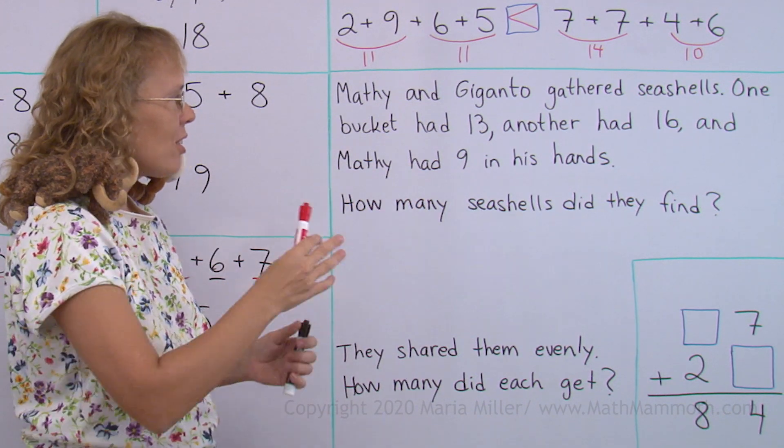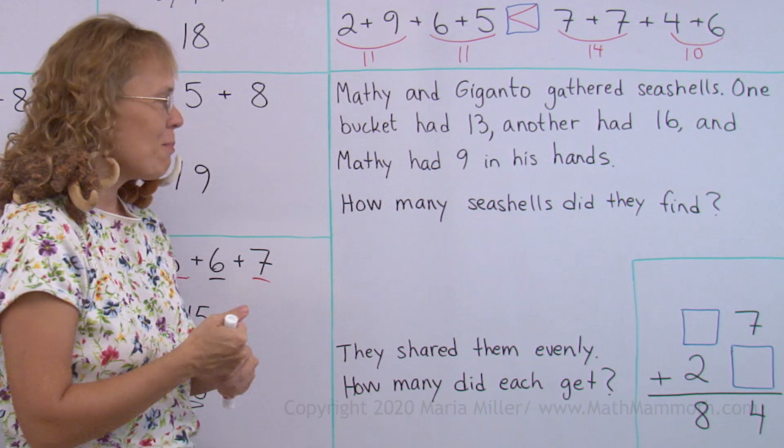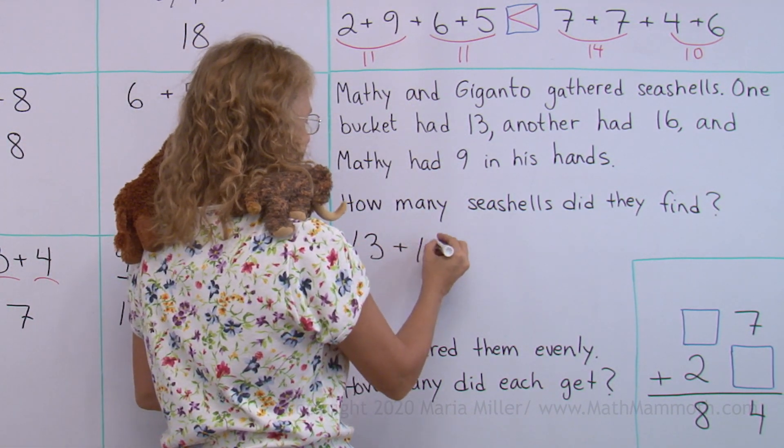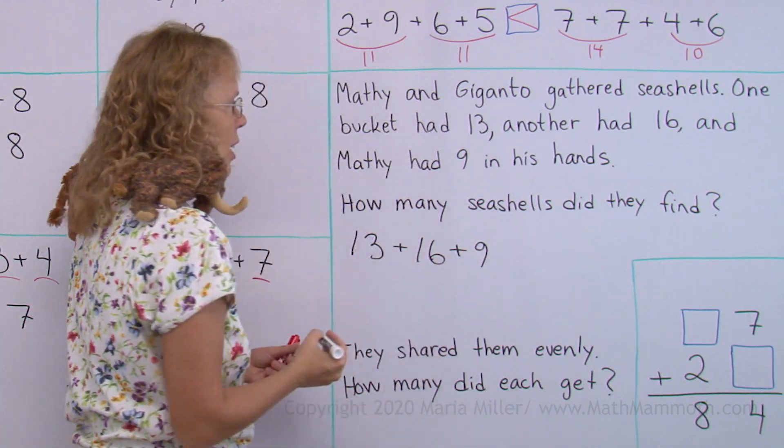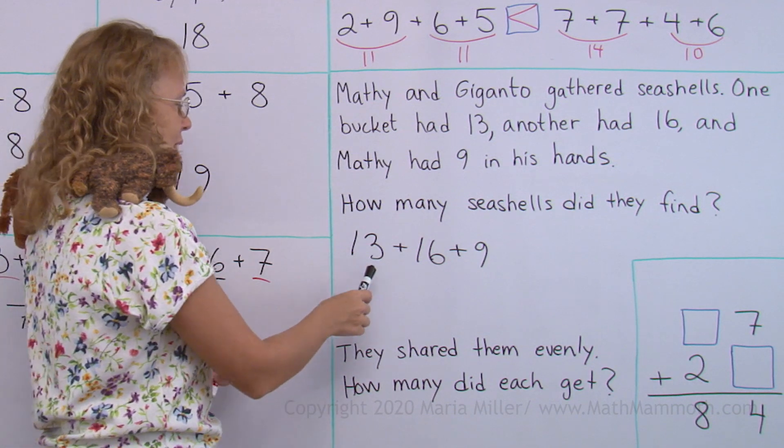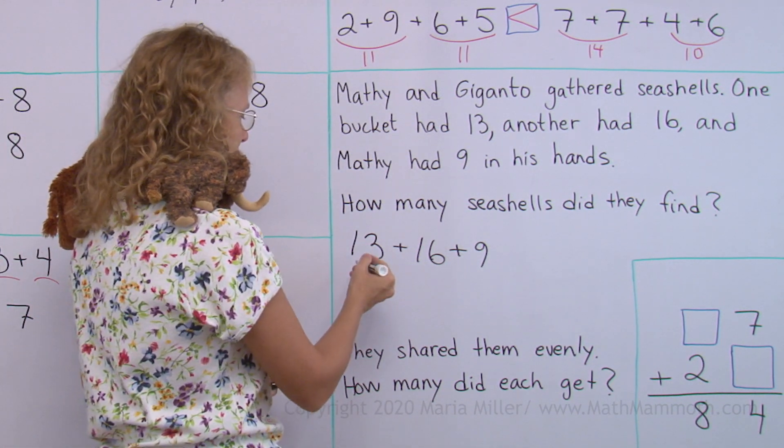They gathered this many seashells: 13 and 16 and 9. And we, of course, need to add those numbers. Let me write them here and see if we can find some easy way to add these three numbers. 13, 16 and 9. In parts, again, you can add 3 and 6 and then 10, 10, 9.